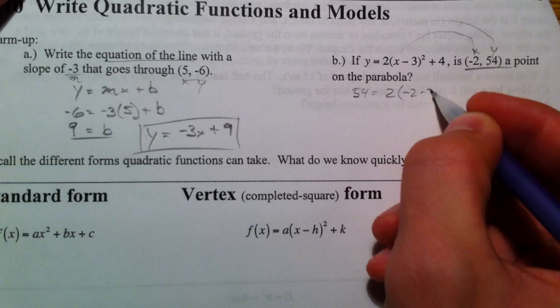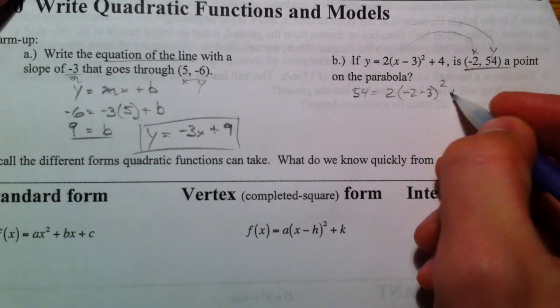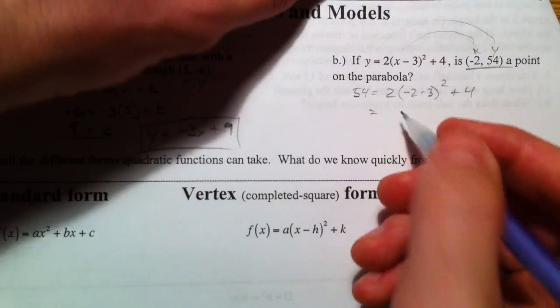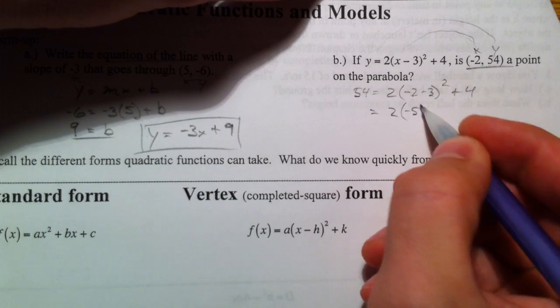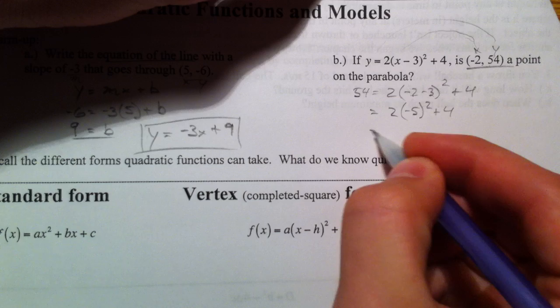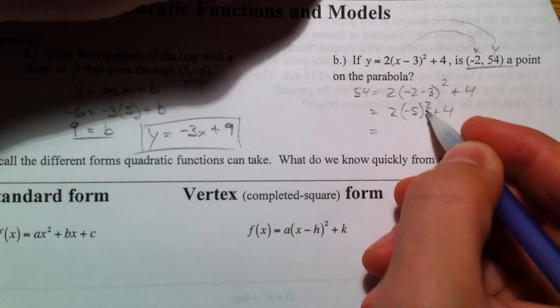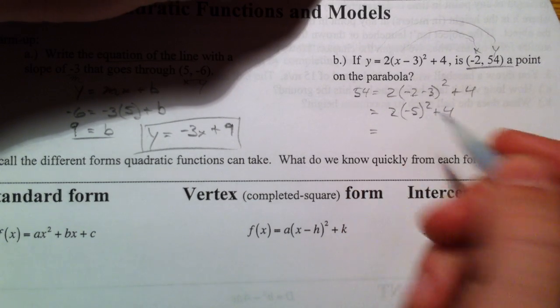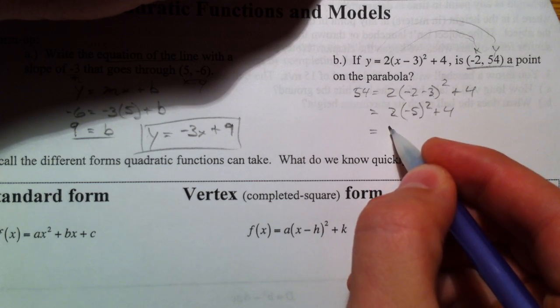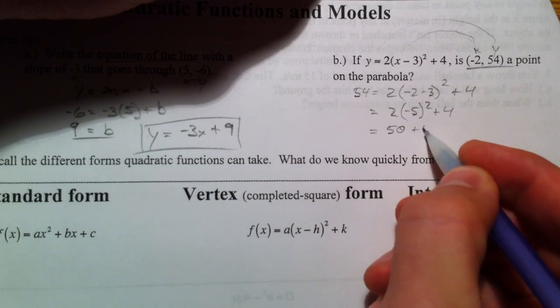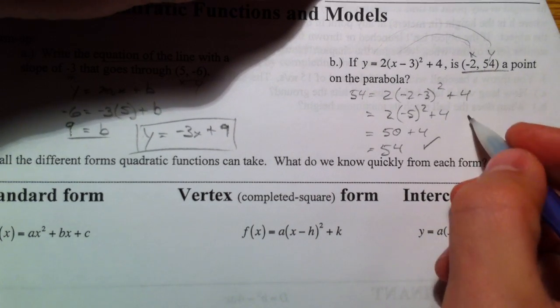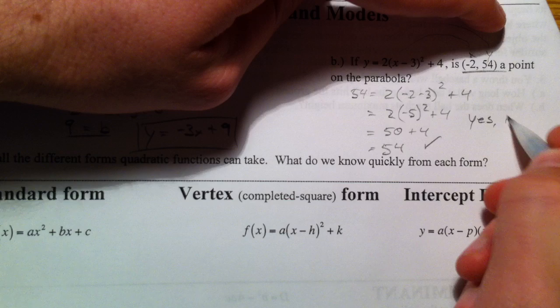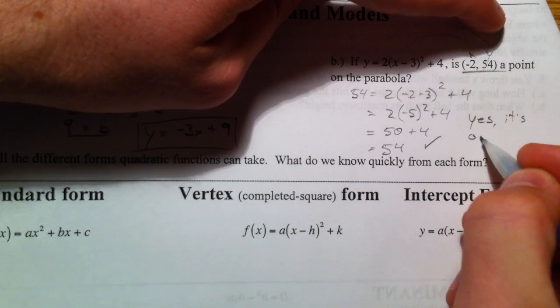I'm going to plug in negative 2 minus 3 plus 4. Negative 2 minus 3 is a negative 5. Negative 5 squared, remember we have to do exponents before multiplication, so that's 25 times 2, which is 50 plus 4, and so we get 54. It checks out. Yes, it's on the parabola.